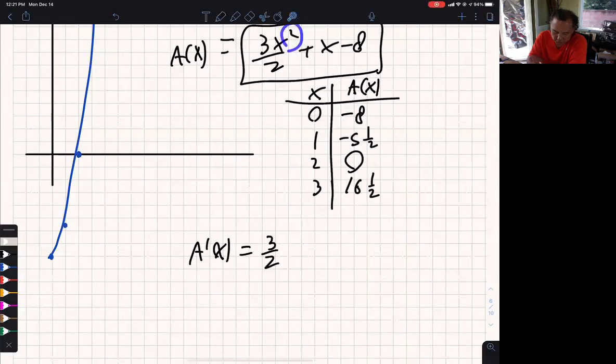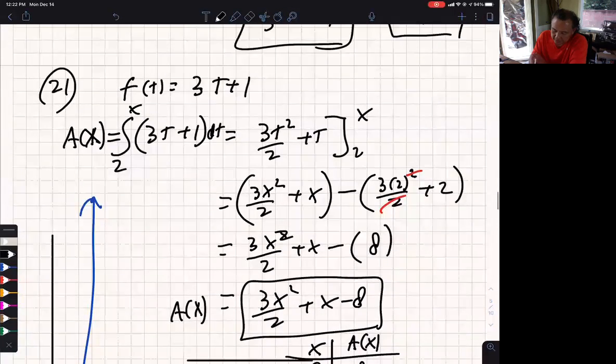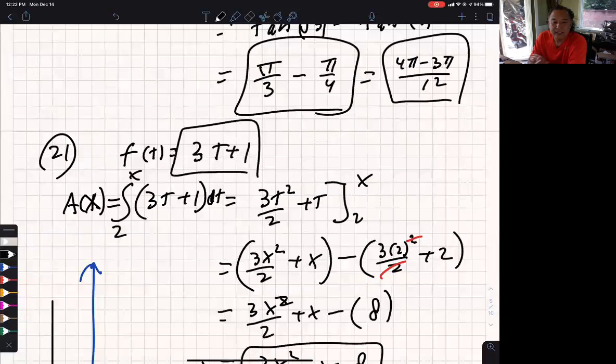3 over 2 is a constant. I bring the 2 in front. So it's going to be 2x plus, and the derivative of x is 1. So it's going to be plus 1. And the derivative of negative 8 is 0. So my A'(x) is 3x plus 1. And if you look, that matches that. Bingo. We've done it.